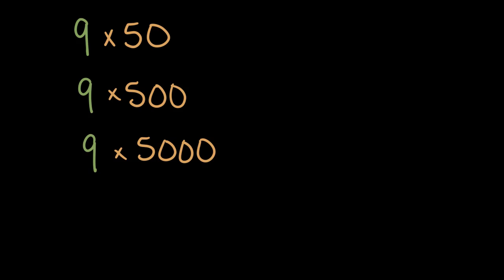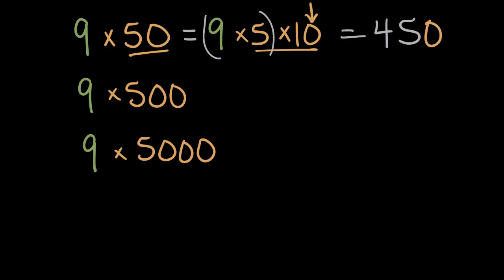Nine times 50 will be the same as nine times 5 times 10, because we broke up our 50 into a 5 times 10. And then if we multiply across, nine times 5 is 45. And to the end, we're going to add one zero. The pattern for times 10 is to add one zero. We can keep going here.